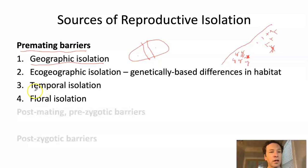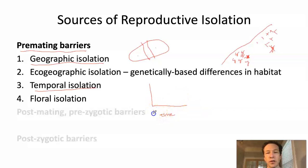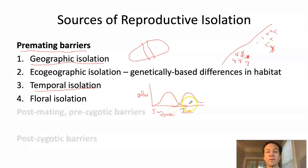Third, we can have temporal isolation. In plants, this means that when flowers form and spread pollen could differ between two species. If one species flowers around March and another flowers in June, there is little or no opportunity for pollen from one to fertilize flowers of the other. These are incipient species — different populations going through the process of becoming reproductively isolated — and with little pollen flow between them, they will continue to diverge into different species.